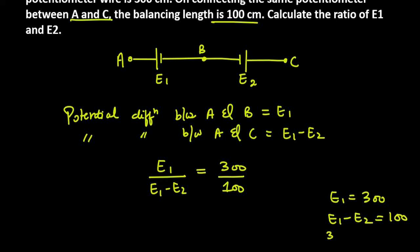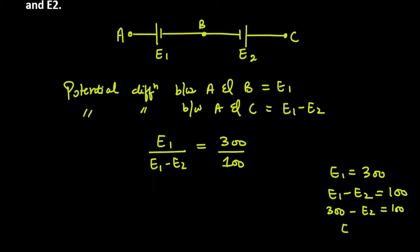We know E1's value is 300, so we can easily find the value of E2. E2 will be 200. If E2 is 200, then the ratio between E1 and E2 is: E1 is 300, E2 is 200. Cancel these, you will get 3 over 2 or 1.5. So yes, this is your answer, or 3:2.